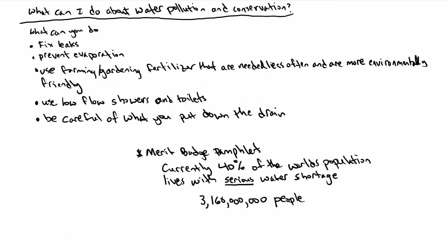What can you do about water pollution and conservation? You can fix leaks, prevent evaporation, use farming and gardening fertilizers that are more environmentally friendly, and use low-flow showers and toilets. In my own house, switching to a low-flow shower system meant three or four people could take showers without draining the water heater. Also be careful about what you put down the drain — avoid pouring oils or other harmful substances.